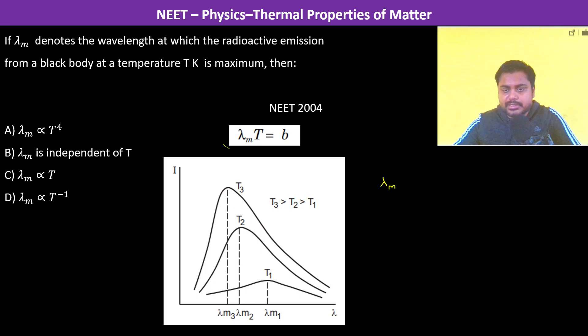Lambda maximum multiplied by temperature is equal to a constant. Therefore, lambda m is equal to k divided by T.